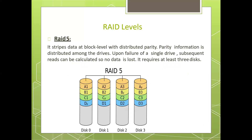RAID level 5 stripes data at the block level with distributed parity. Parity information is distributed among the drives. Upon failure of a single drive, subsequent reads can be calculated so no data is lost. It requires a minimum of three disks.